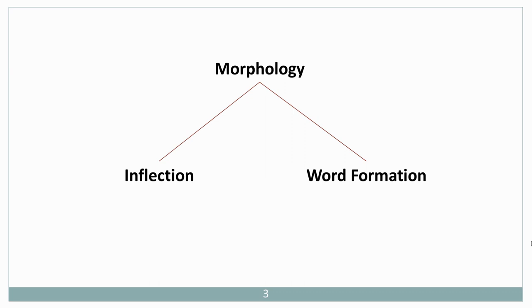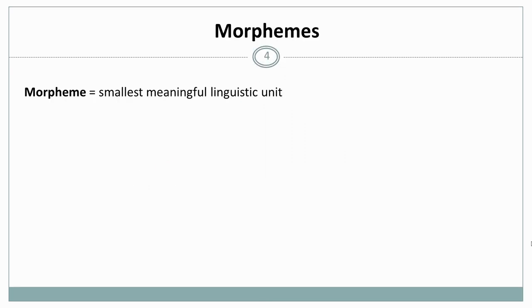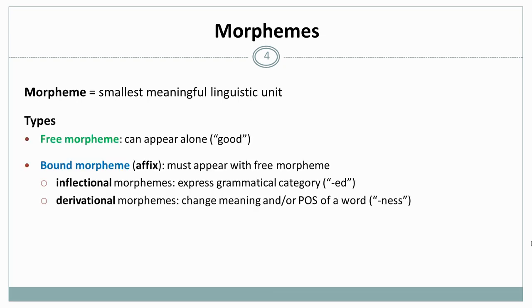But first, let's introduce the important idea of a morpheme. A morpheme is the smallest meaningful linguistic unit. And there are different types of morphemes, namely free morphemes and bound morphemes. Free morphemes can appear alone; they can function as a word. For example, good is a word that you can use in English.